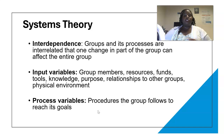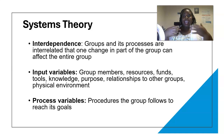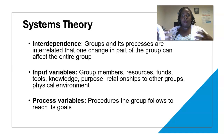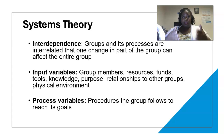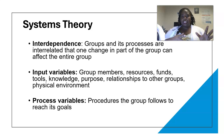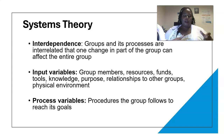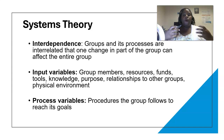Process variables are the procedures that the group follows to reach its goal. There are instructions I give you as your instructor, but your group also has the freedom to create its own rules. For example, we have the group contract to set up camaraderie and define the rules of how we are going to structure our group.